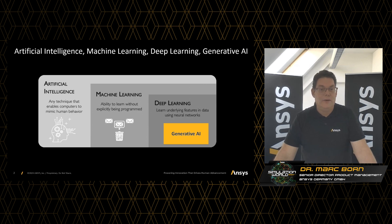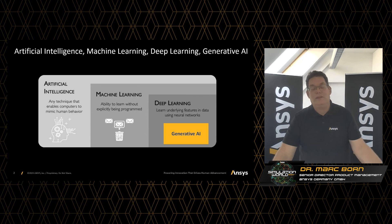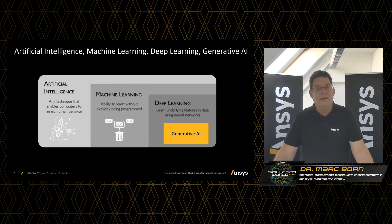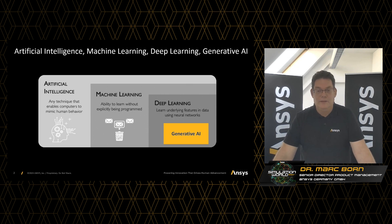AI is independent of the way it is programmed — it can be a set of rules, like in earlier expert systems, or the algorithm can be machine learning. Machine learning is a specific way to achieve AI where the computer is able to solve problems it was not actually programmed for. Deep learning is a subset of machine learning that uses algorithms close to how the human brain works, using neural networks in several layers. Generative AI, which we're all so excited about now, is realized using deep learning.